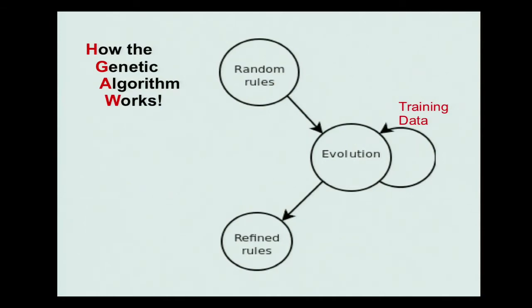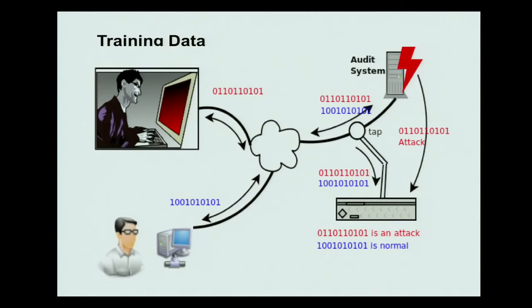Here's how the genetic algorithms work. It's basically a way you have to use audit data. You pick a set of random rules, you create random rules, go through the evolution process, and then you end up with these refined rules. I'm going to take you through the process of generating these rules.